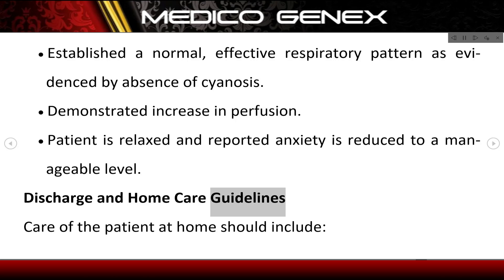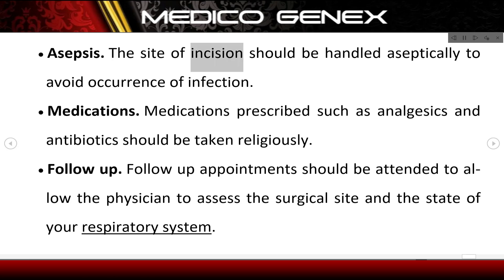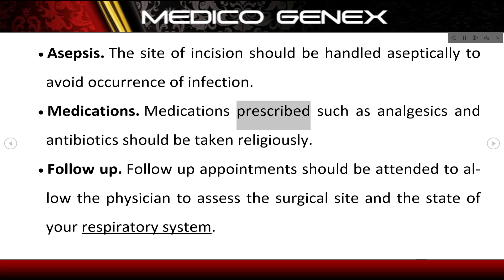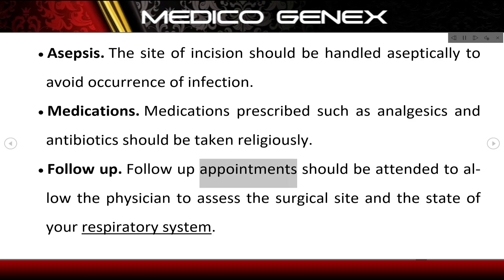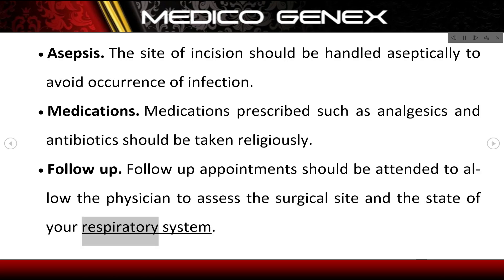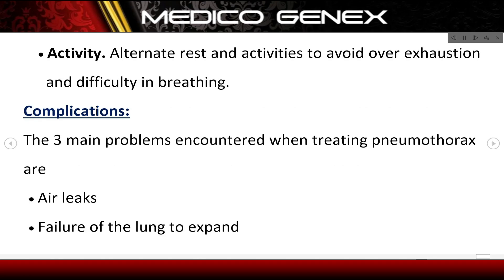Discharge and home care guidelines. Care of the patient at home should include: asepsis — the site of incision should be handled aseptically to avoid infection; medications — analgesics and antibiotics should be taken as prescribed; follow-up appointments should be attended to allow the physician to assess the surgical site and the state of the respiratory system; and activity — alternate rest and activities to avoid over-exhaustion and difficulty in breathing.